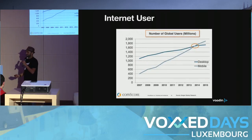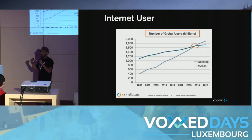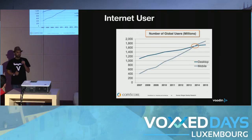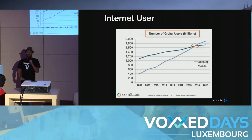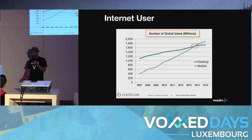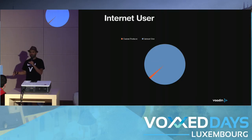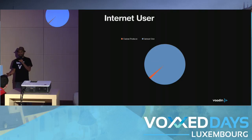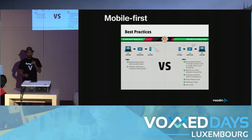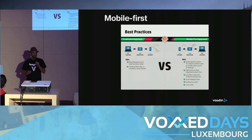Statistics show that the number of people connected online from mobile devices took over at the end of 2013 or beginning of 2014. So whether you like it or not, the number of people who prefer mobile is increasing. This is up to you now — who do you want to target? Content producers like most people in this room, or the vast majority of people around the world?